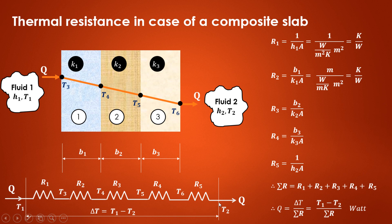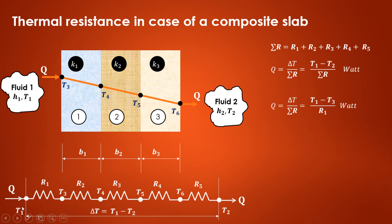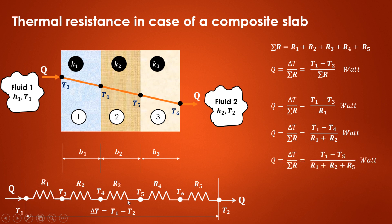The overall temperature difference is T1 minus T2, and the total resistance is R1 plus R2 plus R3 plus R4 plus R5, which equals summation of R. Using this concept we can find out the various interface temperatures. For temperature difference T1 and T3, we use only R1 in the denominator. For T1 and T4, we use R1 plus R2. For T1 and T5, the resistances present are R1 plus R2 plus R3.